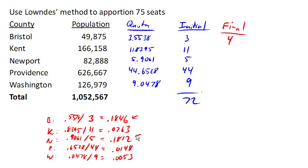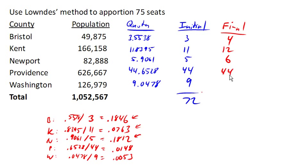Newport has the next highest ratio, so they're going to get an extra seat. Then Kent is the next biggest, so Kent will get an extra seat. The other two will not, and that allocates our 75 seats.